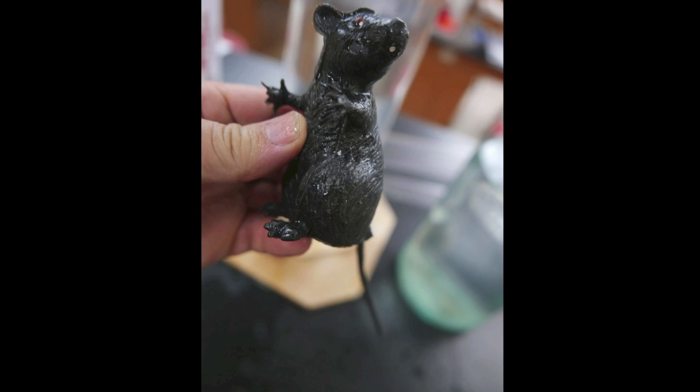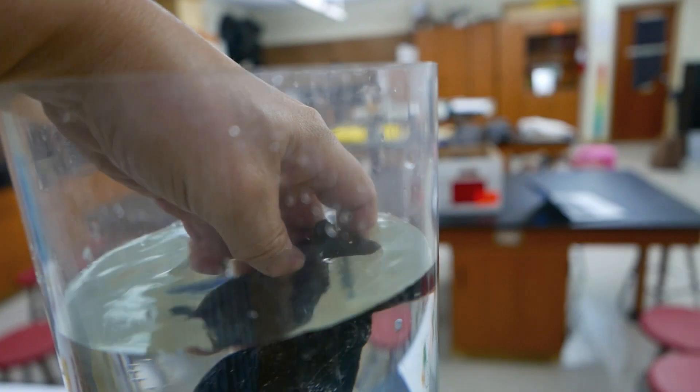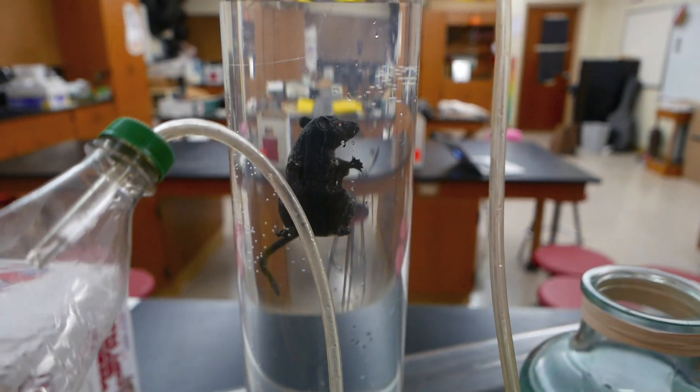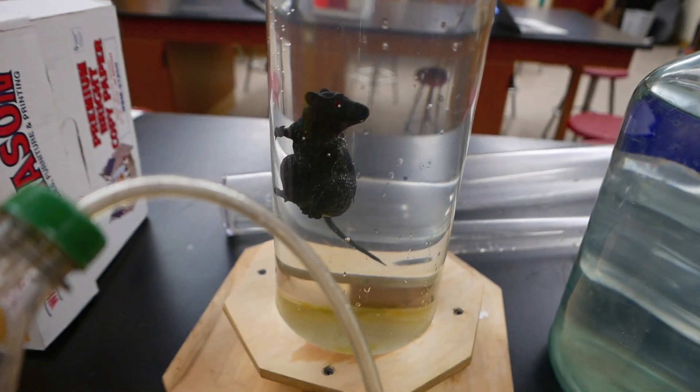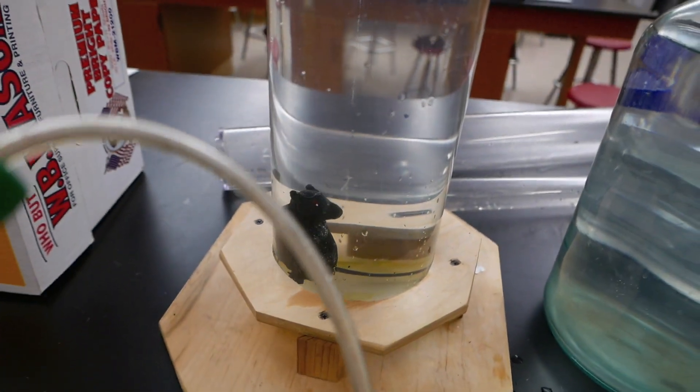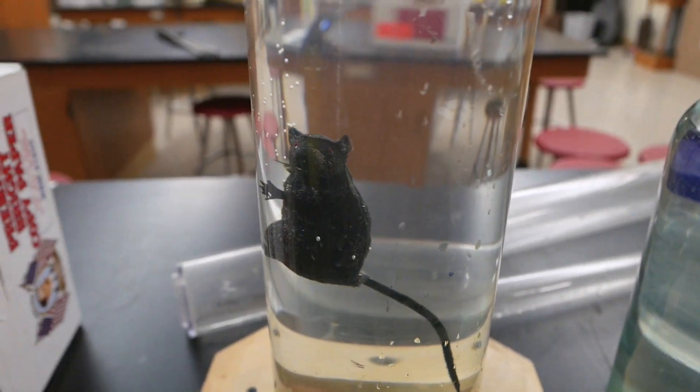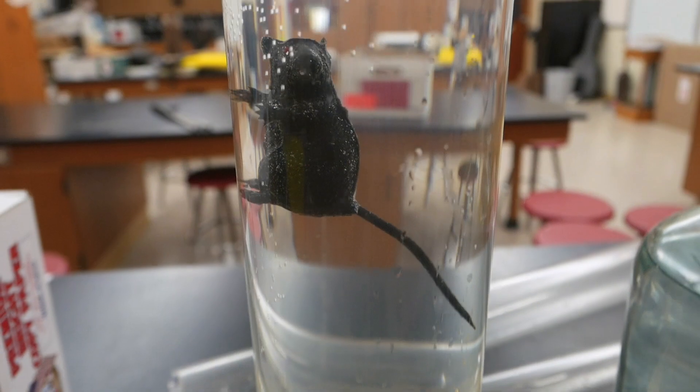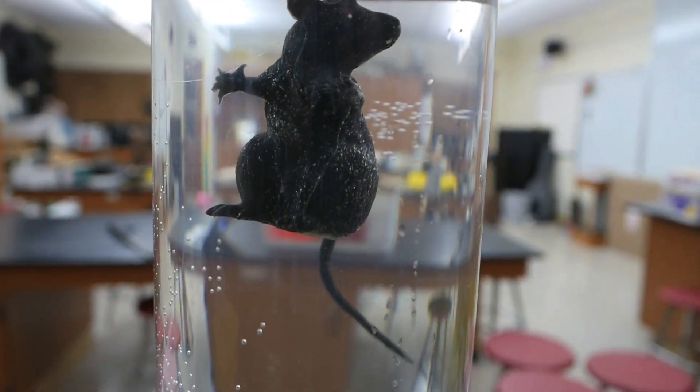Now it's time to try the rubber rat. This nut keeps him centered so that the bottom is down. I'm going to adjust the water so he just barely floats. Put the top on, squeeze the bottle, and down he goes. Release the bottle, and it should start coming up. There it goes. And there's our rat diver.